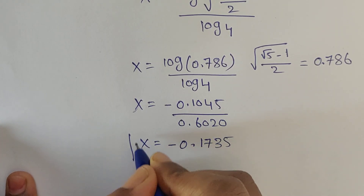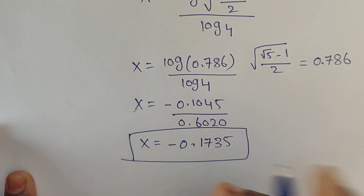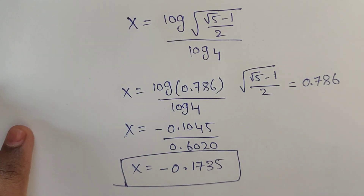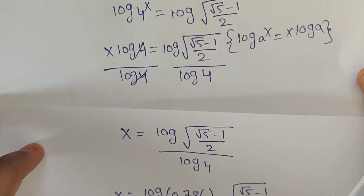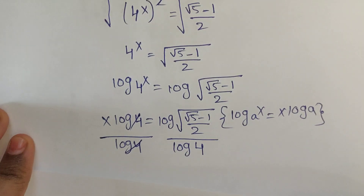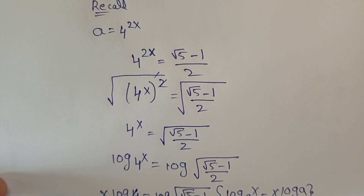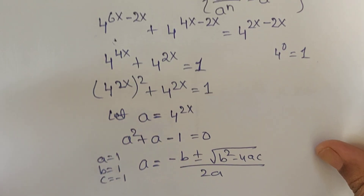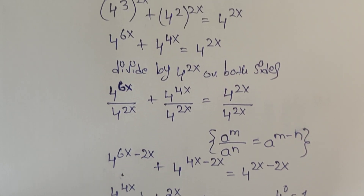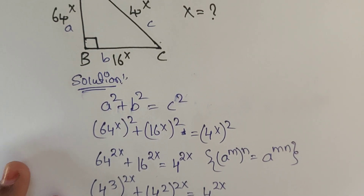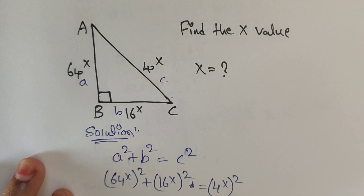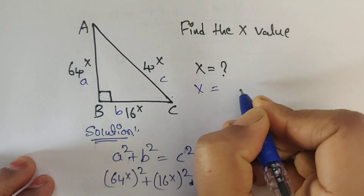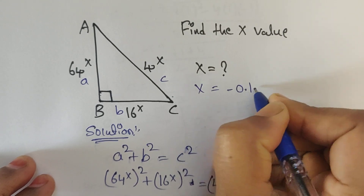So this is the x value. The final answer is x equals minus 0.1735.